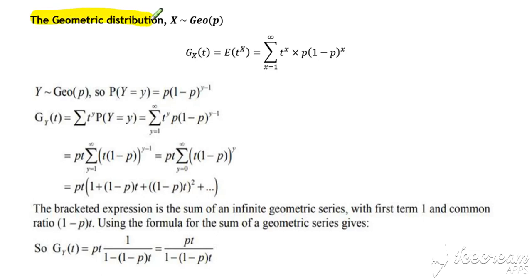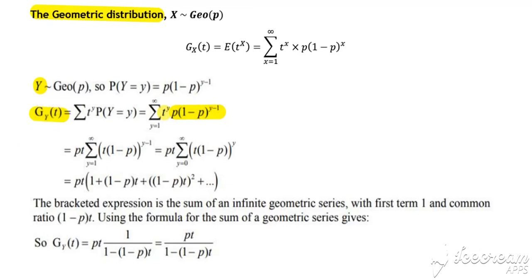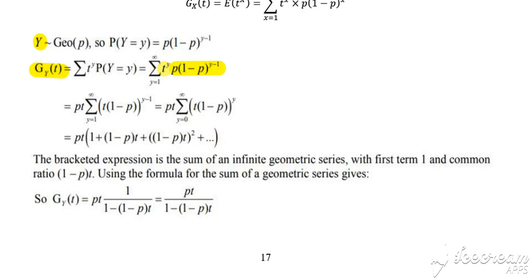For a geometric, we start with our probability generating function being our probability multiplied by t to the y. We need to be careful with this next stage. We've taken out a factor of p, but also a factor of t. The reason we've taken out a factor of t is so that t can be raised to the power of y minus 1 and not y, so it can be incorporated into the bracket.